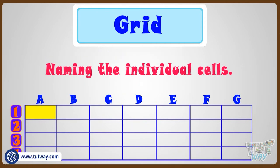Let's name the first cell. Its row name is 1 and its column name is A. So it's 1A. Similarly, let's name the other cell in this row.